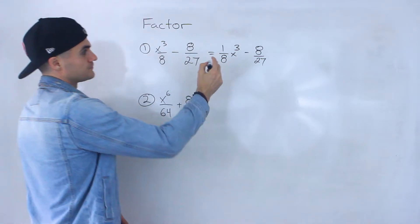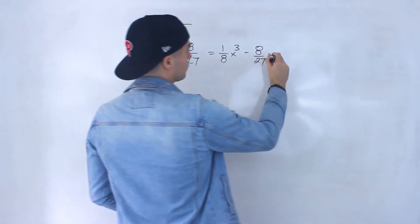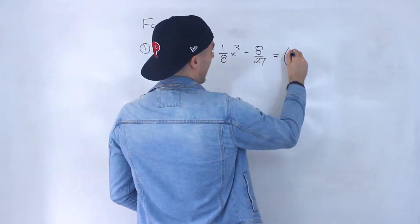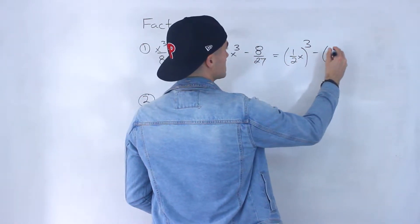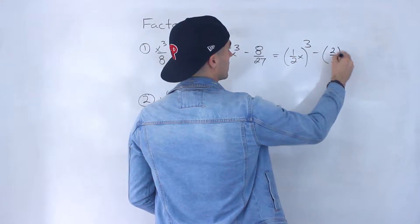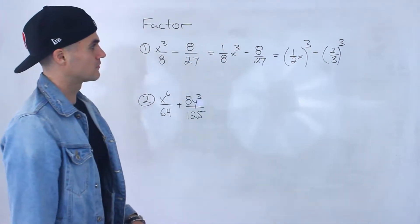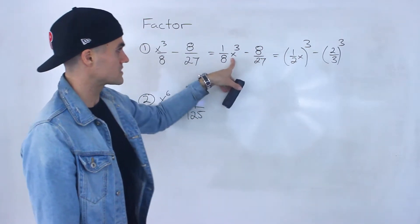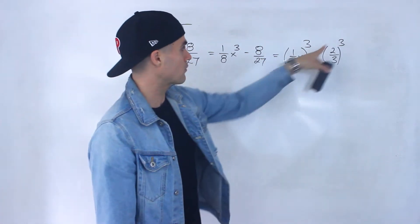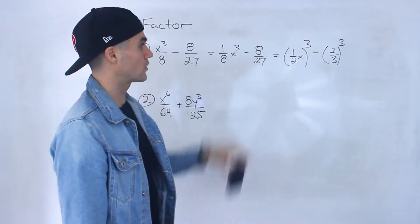And now this here, we can actually rewrite as 1 over 2x to the power of 3 minus 2 over 3 to the power of 3. Right? Because 1 over 2 to the power of 3 is 1 over 8. Then x to the power of 3 is x cubed. And then 2 over 3 to the power of 3 is 8 over 27.